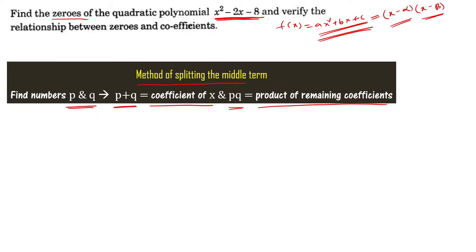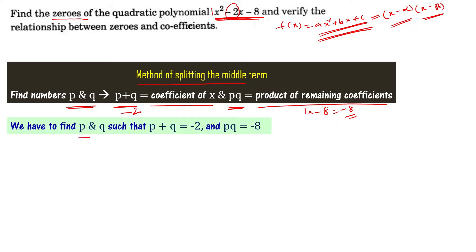In this particular case, p plus q equals the coefficient of x, which is minus 2. And p times q equals the product of the remaining coefficients: 1 times minus 8, which is minus 8. So we need two numbers p and q such that p plus q equals minus 2 and p times q equals minus 8.